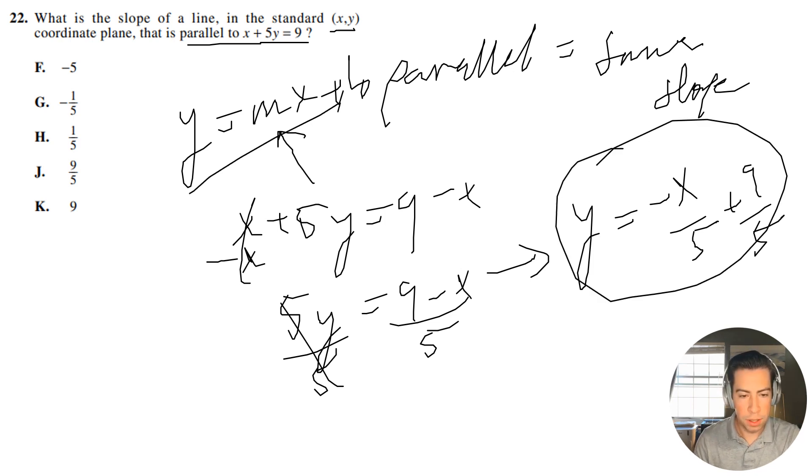If mx equals negative x over 5, that means that m has to equal negative 1 over 5. So this is going to be our slope. It's going to be negative 1 over 5.